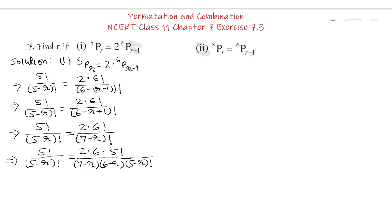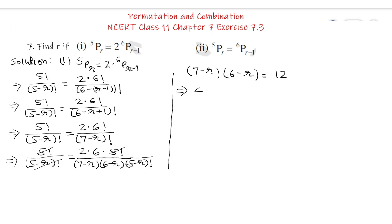Now we cancel the 5 factorial from the numerator on both sides, and cancel (5 minus R) factorial from the denominator on both sides. Cross multiplying gives us (7 minus R) into (6 minus R) equals 6 into 2, which is 12. Expanding: 42 minus 13R plus R squared equals 12, giving R squared minus 13R plus 30 equals 0.